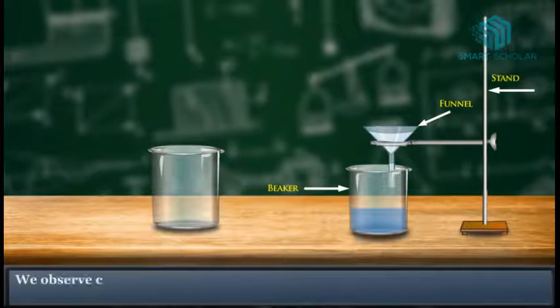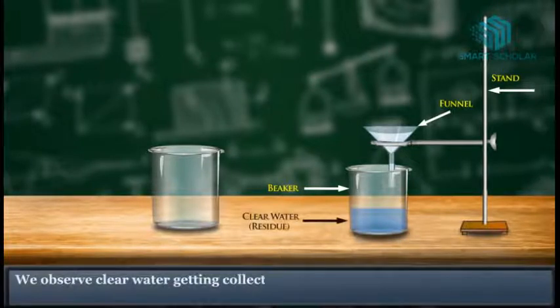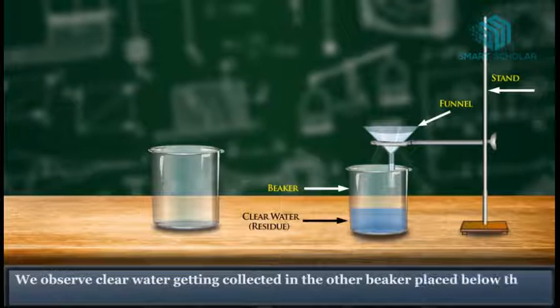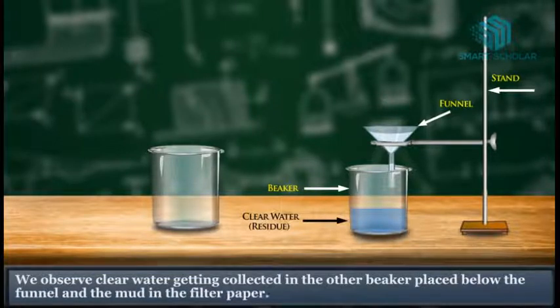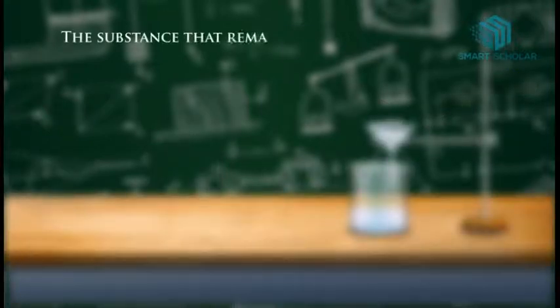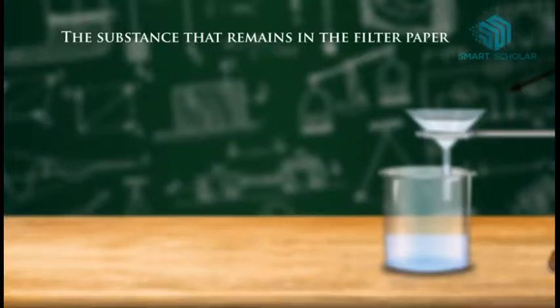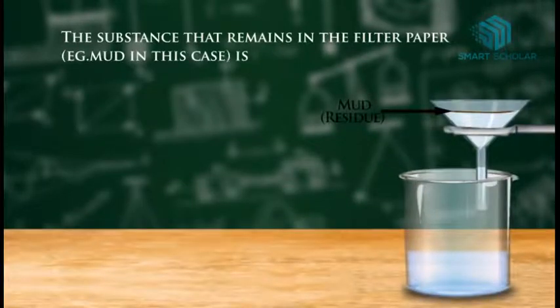We observe clear water getting collected in the other beaker placed below the funnel, and the mud in the filter paper. The substance that remains in the filter paper is called residue.